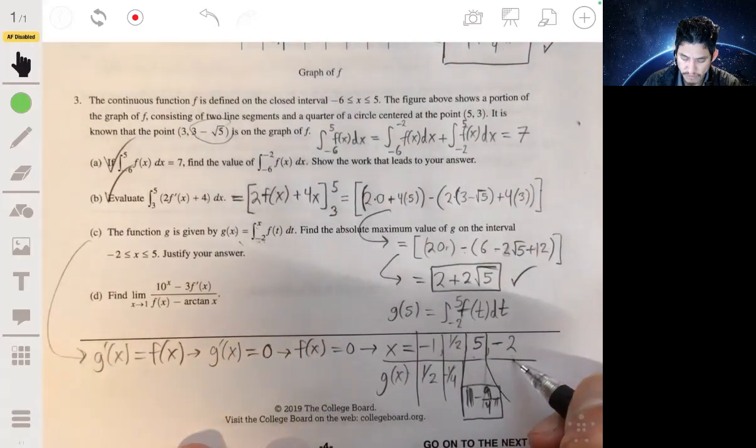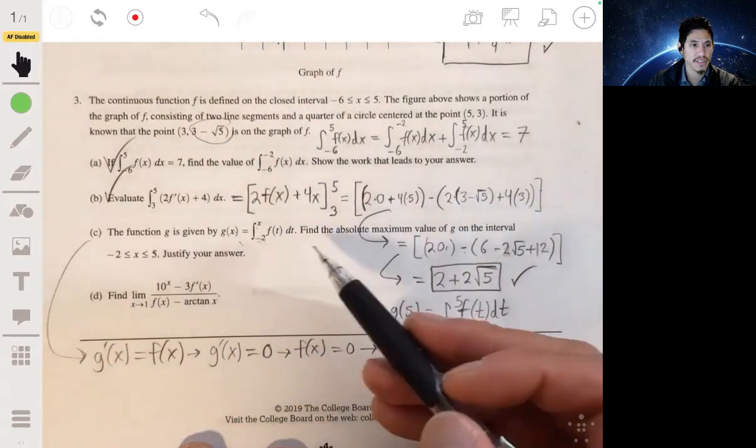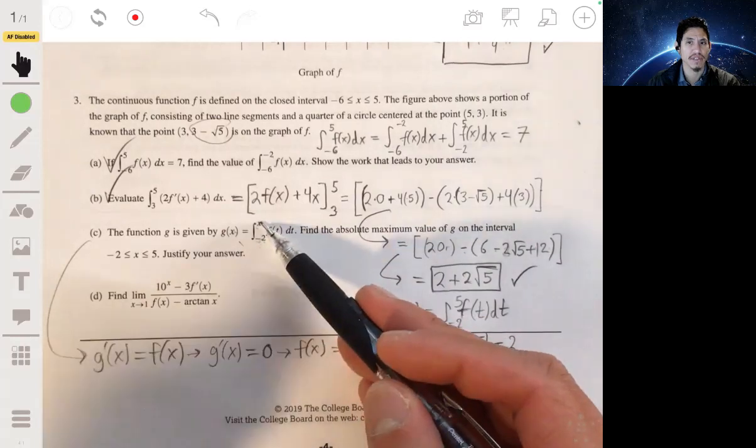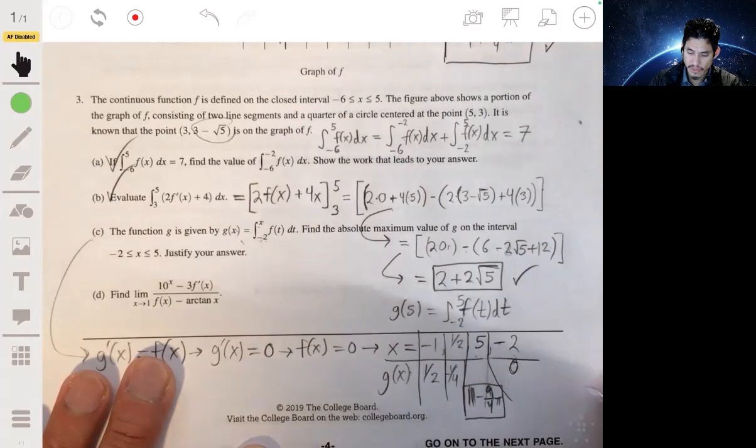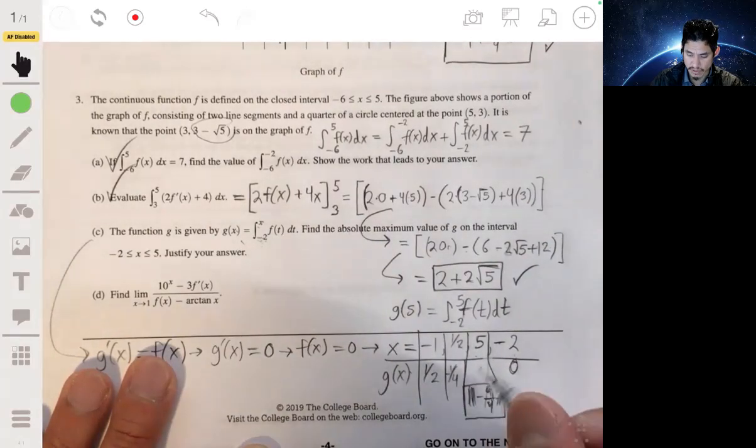And then, g(negative 2)—you're going from negative 2 to negative 2, there's no area. The endpoints are the same, so this would just be zero. So your absolute maximum would be this. This would be your absolute maximum.